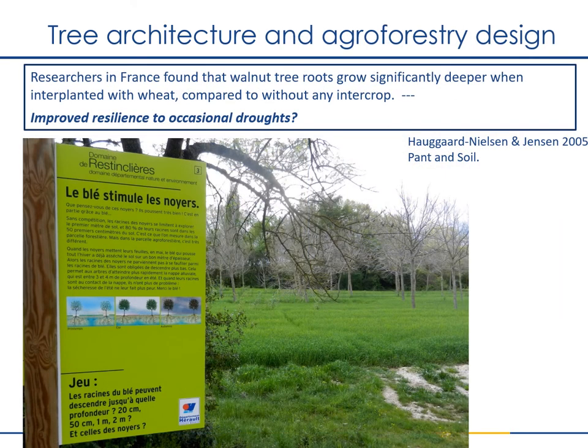These below-ground abilities of trees should be carefully considered in the design of agroforestry systems. Researchers in France found that walnut tree roots grow significantly deeper when the trees are interplanted with wheat compared to being grown without an intercrop, perhaps due to root competition with the wheat in shallower soil depths. The researchers think this factor may help make these systems overall more resilient to occasional droughts. By designing a polyculture system that encourages deeper root growth, you may be able to improve the long-term performance and resilience of your system.